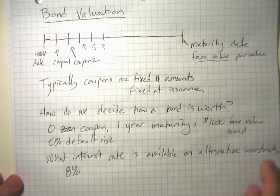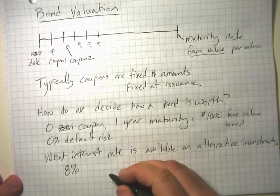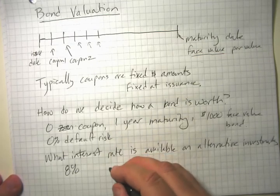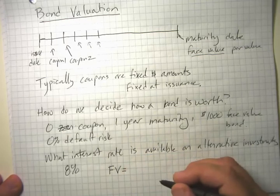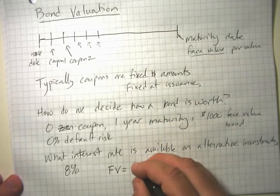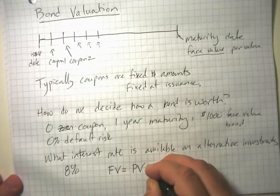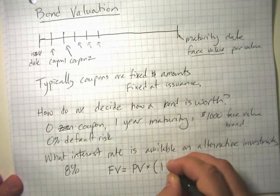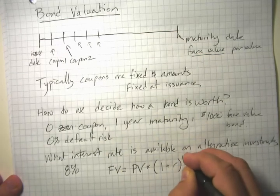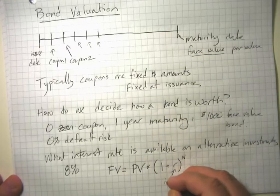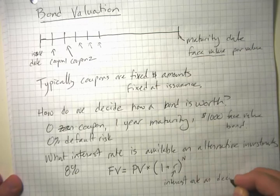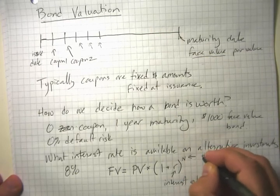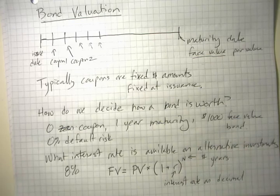At this point, we need the formula for compound growth. The future value equals the present value times one plus the interest rate as a decimal, raised to the number of years. So FV = PV × (1 + r)^n, where r is the interest rate as a decimal and n is the number of years.